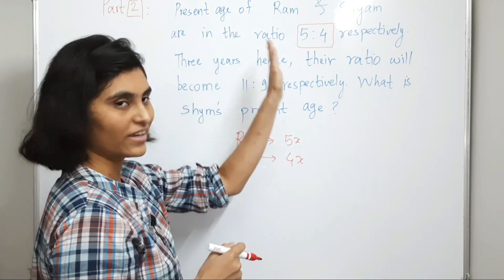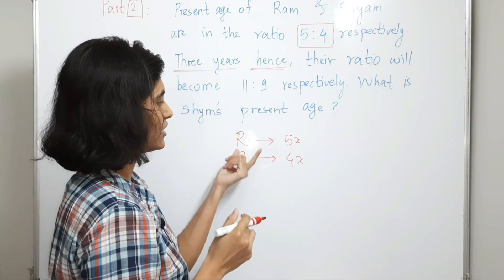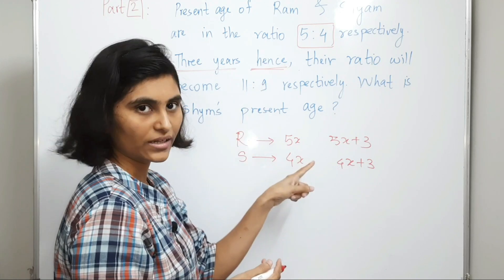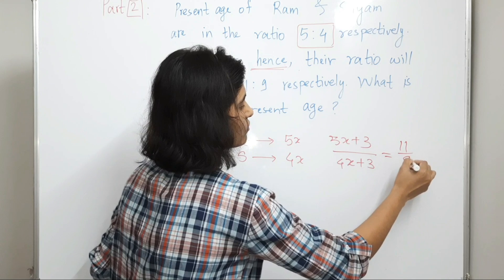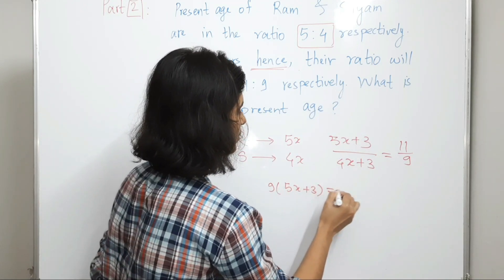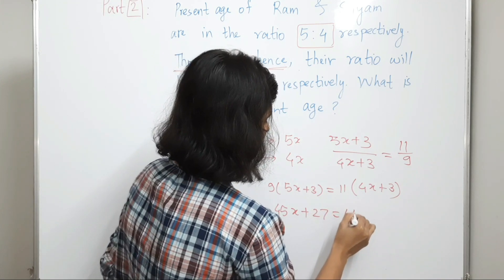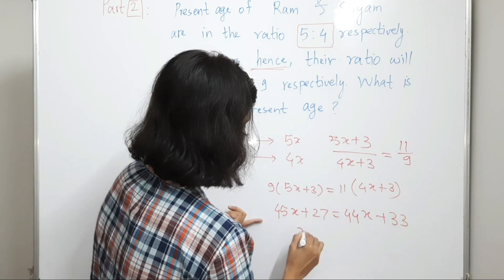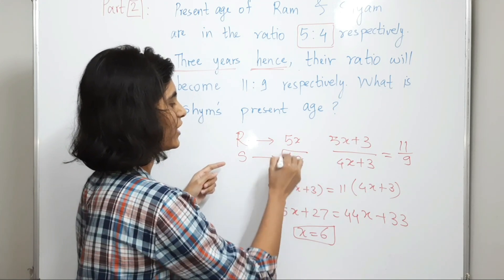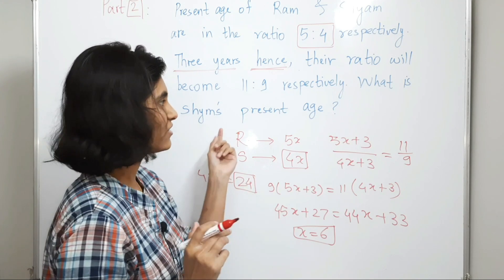3 years hence means something in the future, so we add 3. After 3 years, Ram's age becomes 5X + 3 and Shyam's becomes 4X + 3, and the ratio becomes 11:9. Using cross multiplication: 9(5X + 3) = 11(4X + 3), which gives 45X + 27 = 44X + 33, so X = 6. Shyam's present age is 4X = 4 × 6 = 24 years.